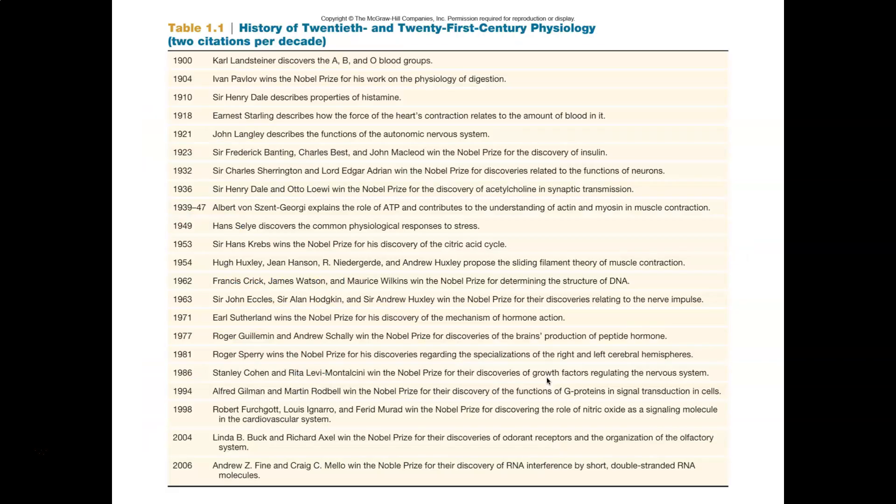For example, if you take a look at this table, what this table actually shows is the Nobel Prize winners over the last 100, 110 years. And what's interesting, if you go back a century, in 1900, Carl Landsteiner received the Nobel Prize for the discovery of blood typing and the blood groups, A, B, and O.